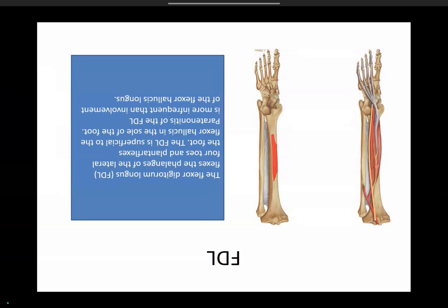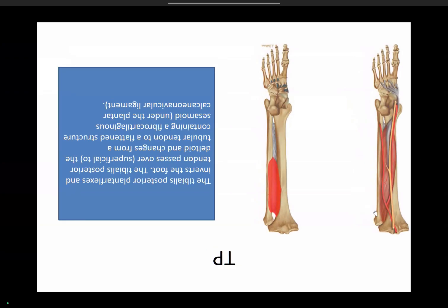Flexor digitorum longus has a big origin in the middle one-third of the tibia, divides into four slips, and inserts into the second to fifth toes. Tibialis posterior is a bulky large muscle, arising from the posterolateral tibia and fibula, lying medial to the neurovascular bundle. It has multiple insertions — the most predominant on the navicular bone — but also gives slips to the cuneiforms and the bases of the second, third, and fourth metatarsals.